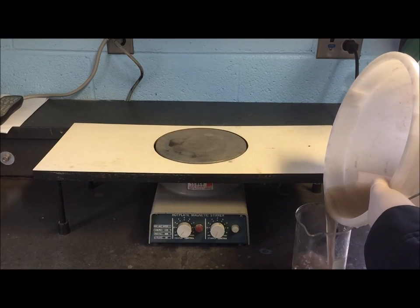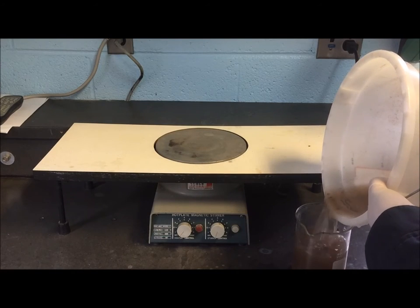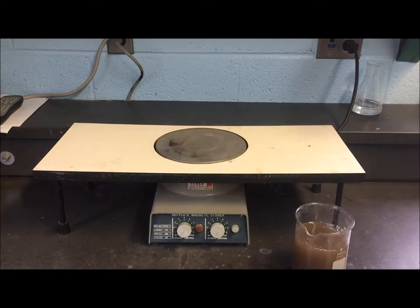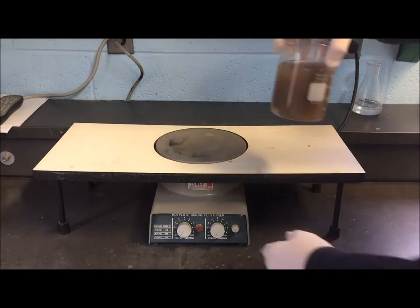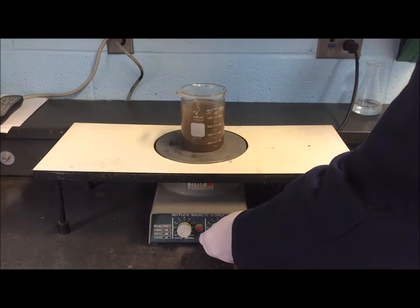We take another sample and pour it into a glass beaker. The beaker is placed on a magnetic stirrer to keep the sample well mixed.